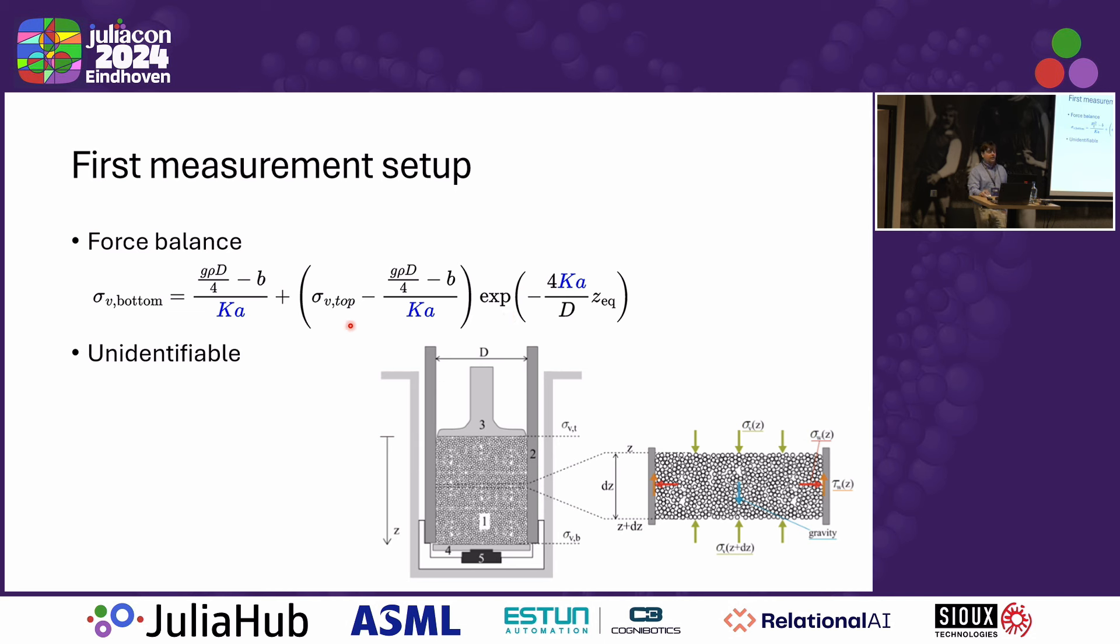This equation is very similar to the one I showed on the previous slide, except that here it takes into account this force that is applied at the top of the column. We gather measurements for a variety of different forces applied at the top. Then again, the goal is to estimate this K, A, and B parameter.